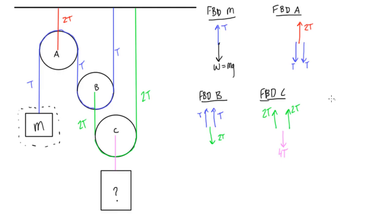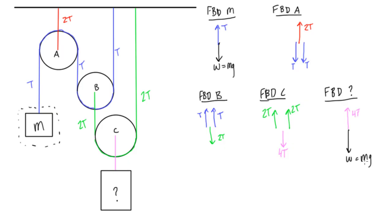The last thing we want to do is the free body diagram of the unknown mass box. We have the tension in the purple cable pulling up, which is 4T, and we have its weight pulling down, which is Mg. So if Mg equals 4T, and T equals mg, we find that this mass has to be 4 times bigger than the hanging mass m.